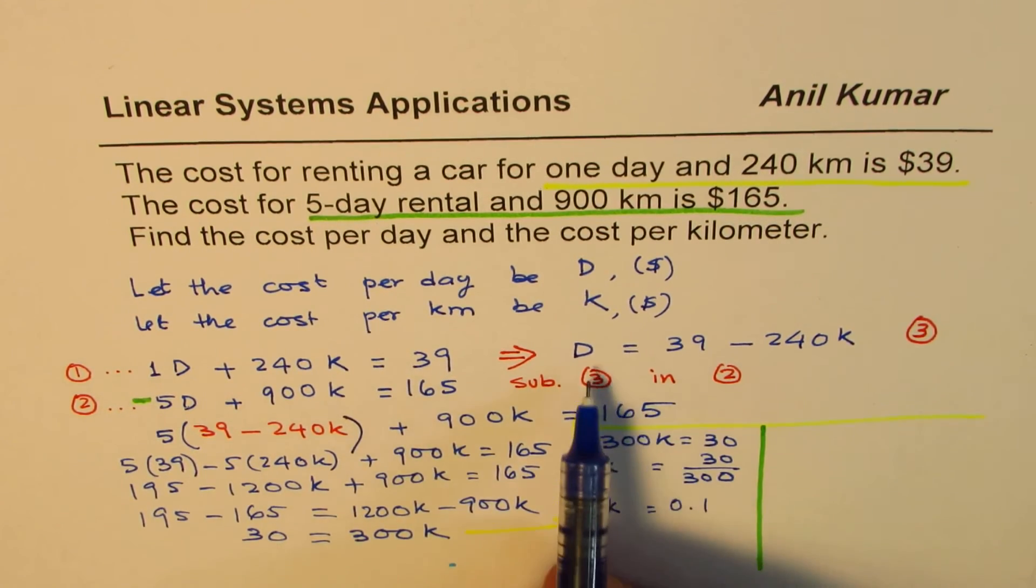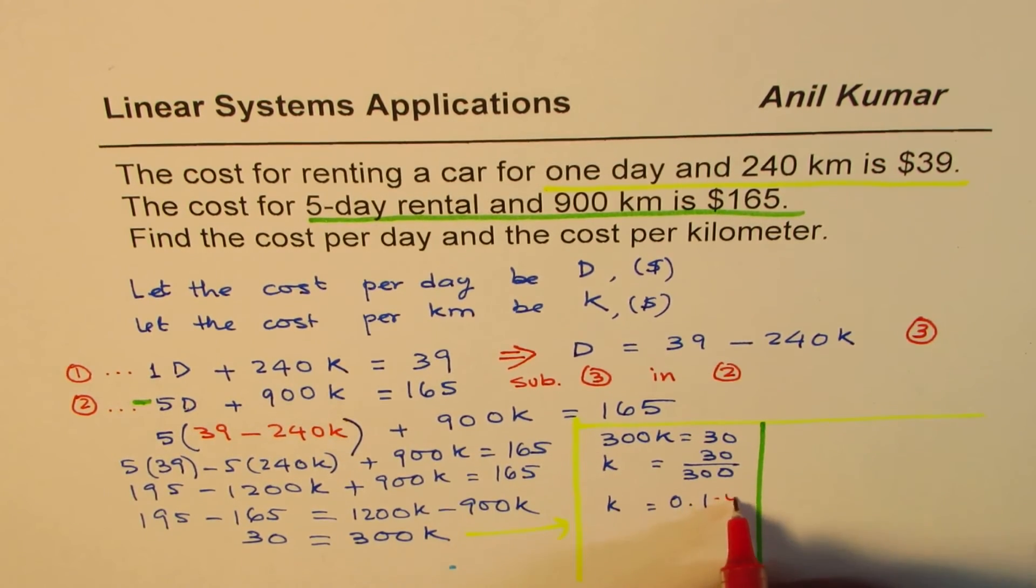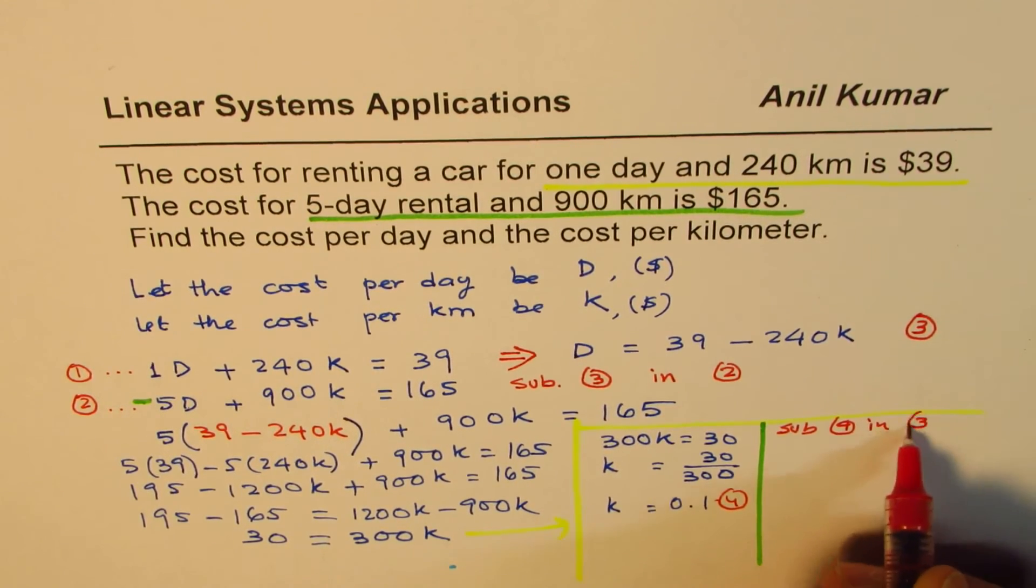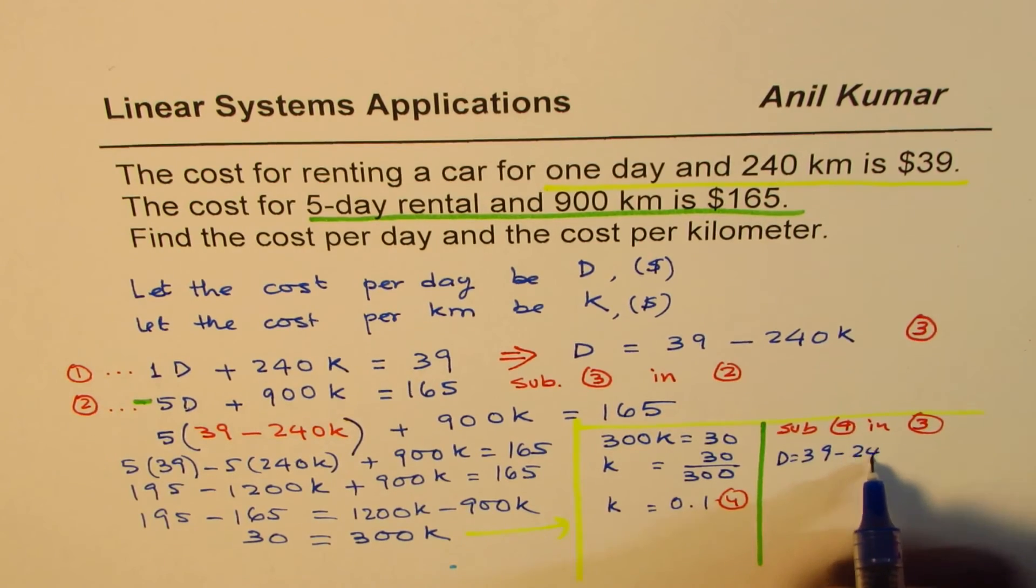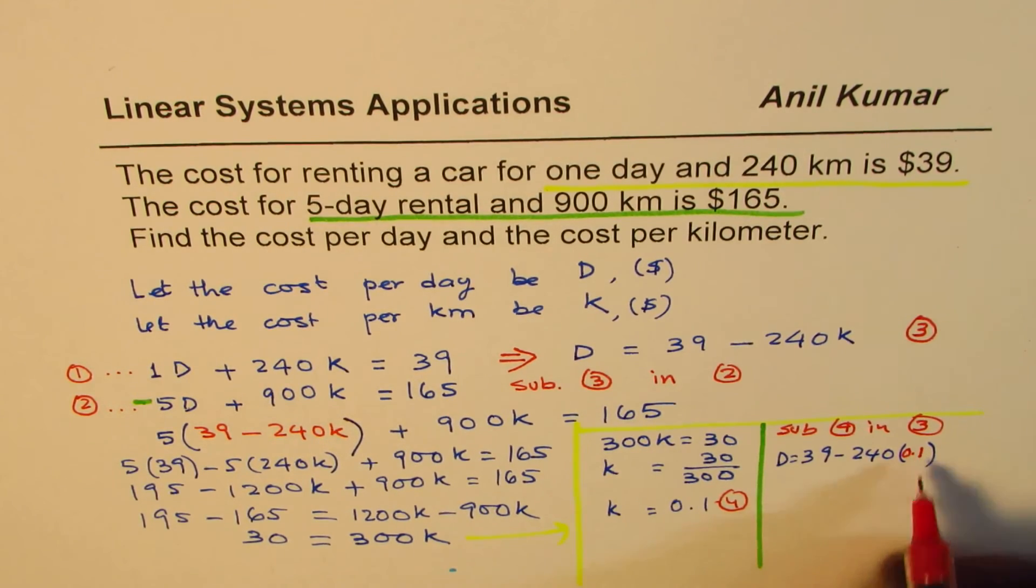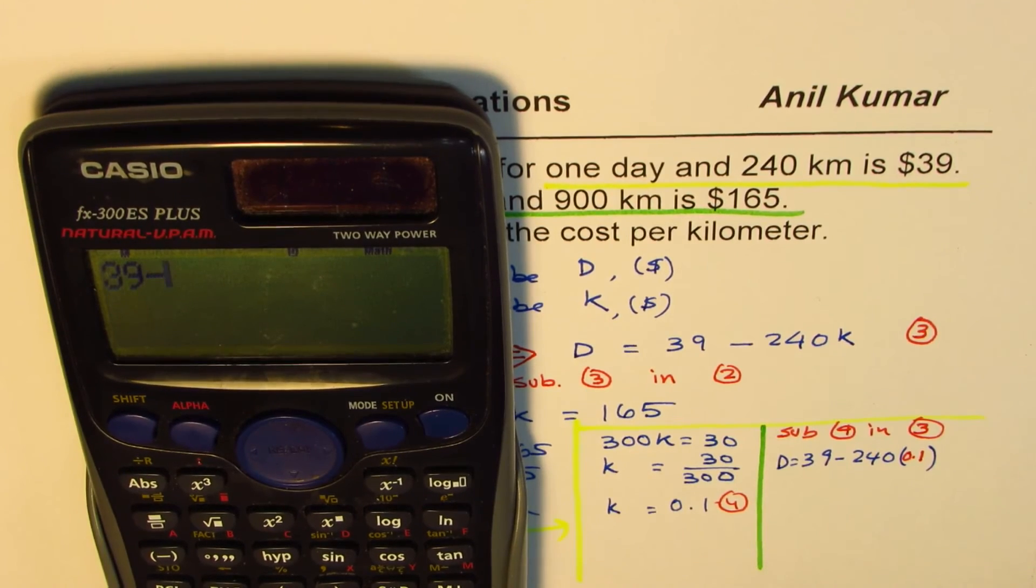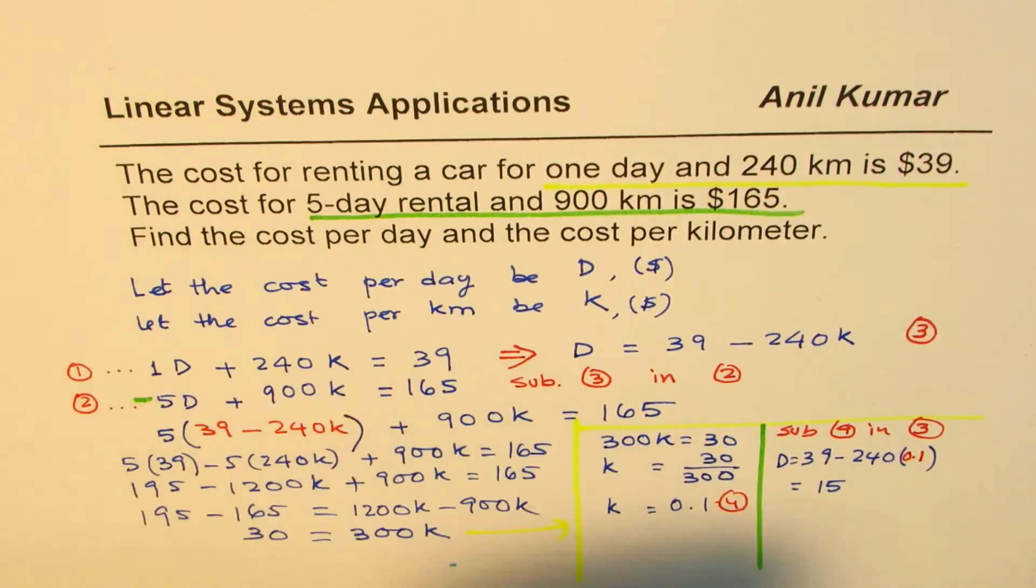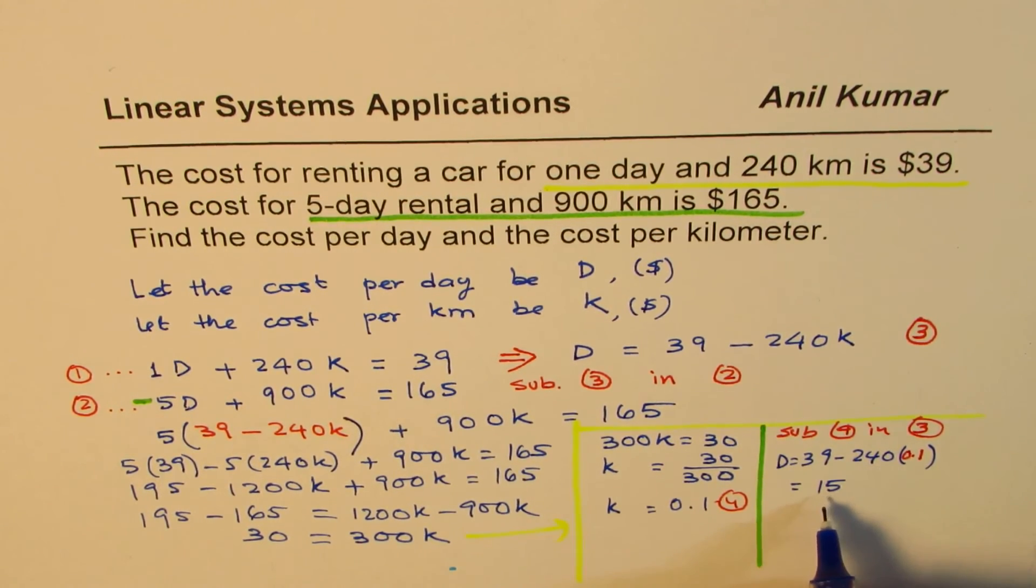Now, let's find how to find the other variable which is D. We'll use equation 3. But let me number this as 4. We got one of the answers in 4. So we'll sub 4 in 3 to get D. D is equals to 39 minus 240 times what? K value. So K value which we just found, 0.1. Let's use the calculator again. We have 39 minus 240 times 0.1, which is equals to 15. It is $15 per day. So that is what we get here.